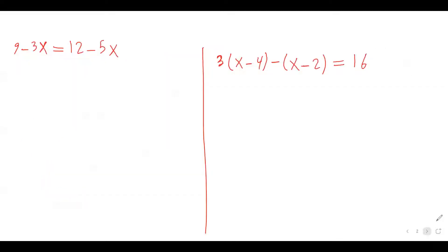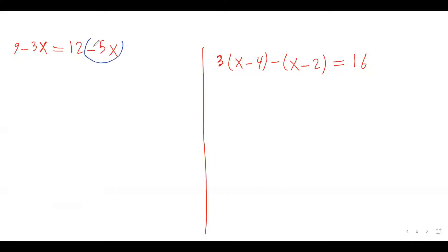Just two more examples. Here is the next one: 9 minus 3x equals 12 minus 5x. Again, the first thing we need to do is to move all the variable terms to one side and all the constant terms to the other side. I have negative 3x here and negative 5x on the right side. I want to move this negative 5x to the left side.